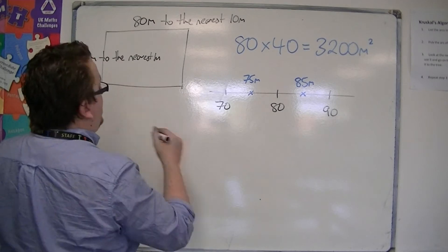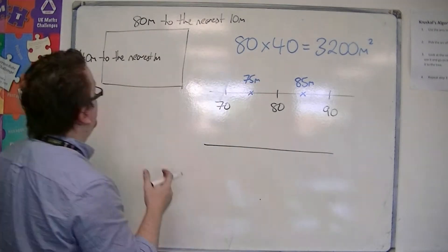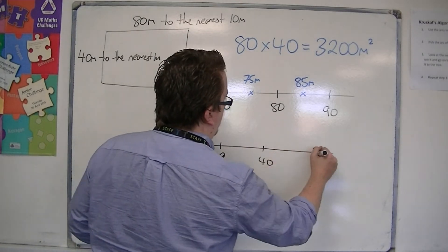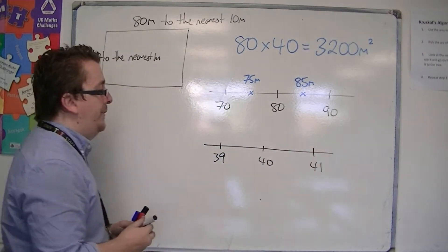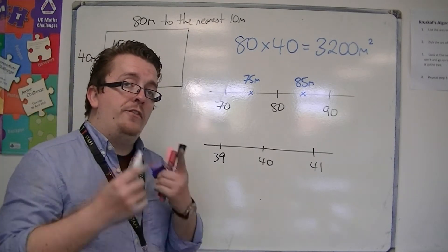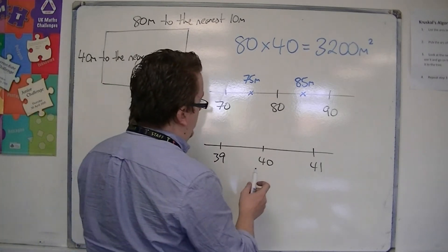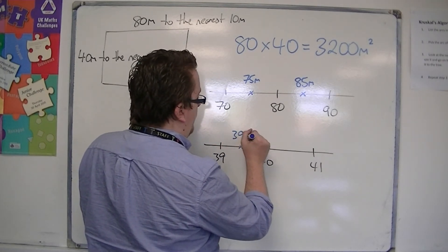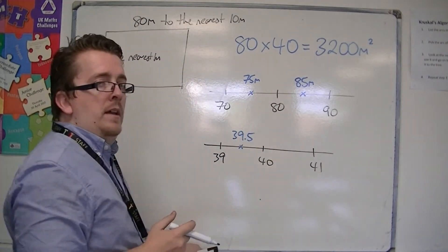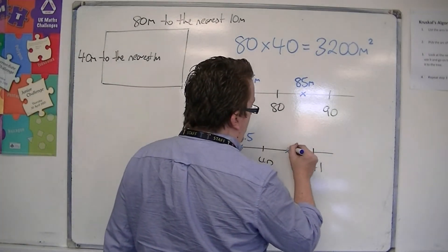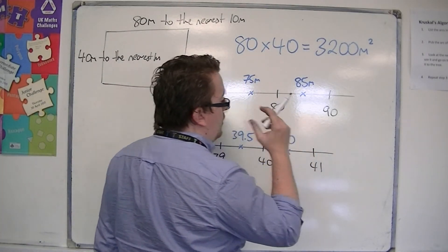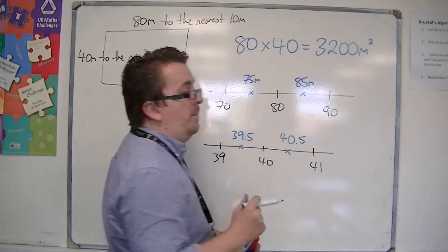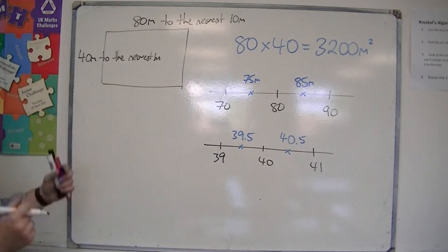For the 40 metres to the nearest metre, we're looking at 39, 40, 41 metres. Either side of the 40 to the nearest metre, it could have been, at its least, 39.5 metres. And at its greatest, it could have been 40.4999..., which is as close to 40.5 as you like.